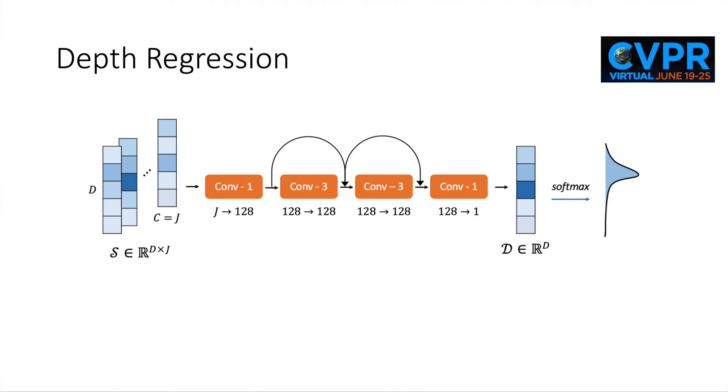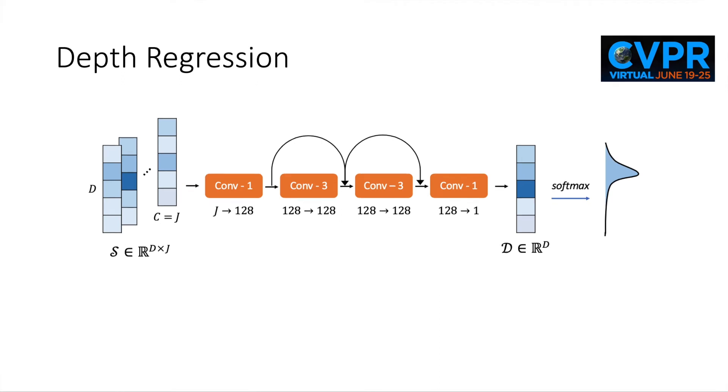We utilize a 1D convolutional neural network with residual links to map the score matrix to a depth vector representing the probability distribution of the depth to be regressed. The depth vector is further transformed to the estimated scalar depth value via a soft argmax operation.